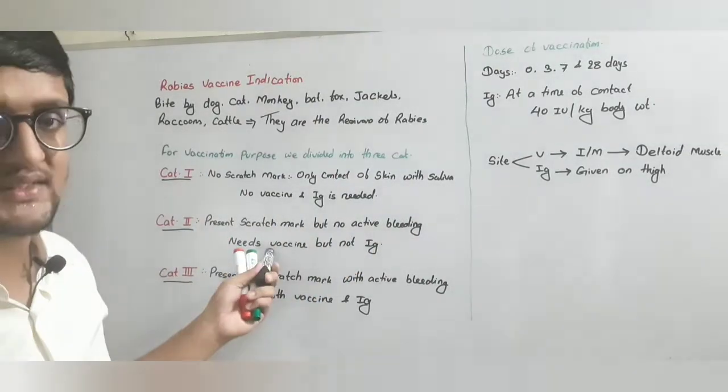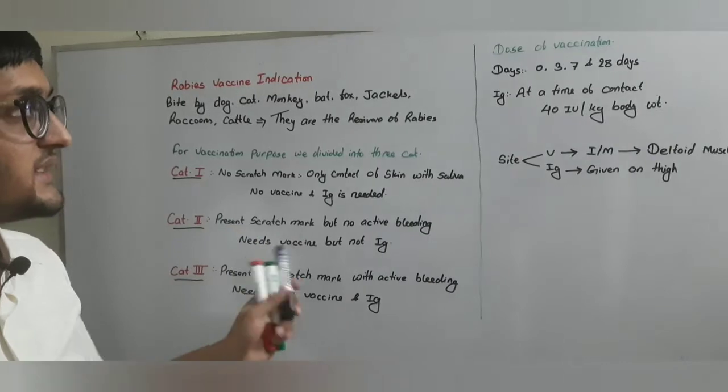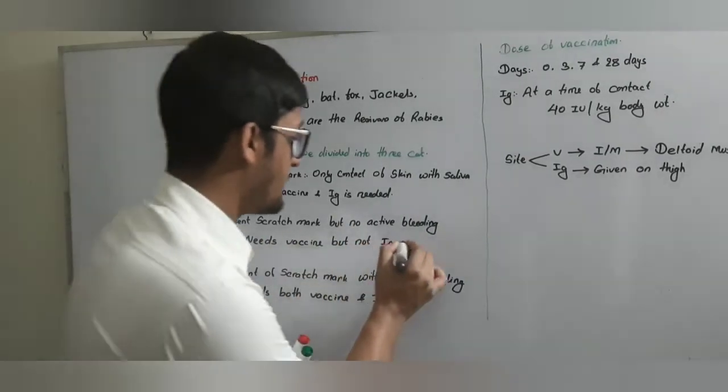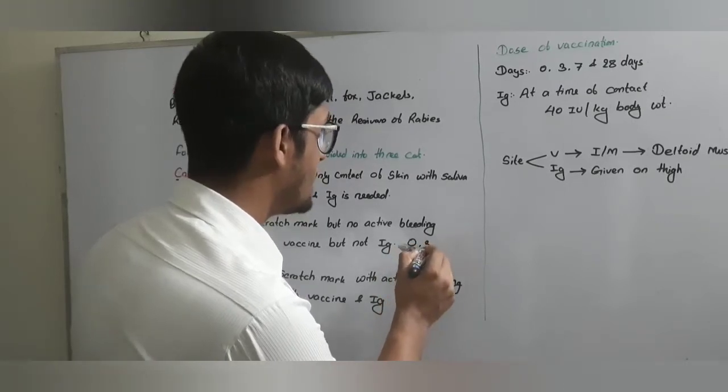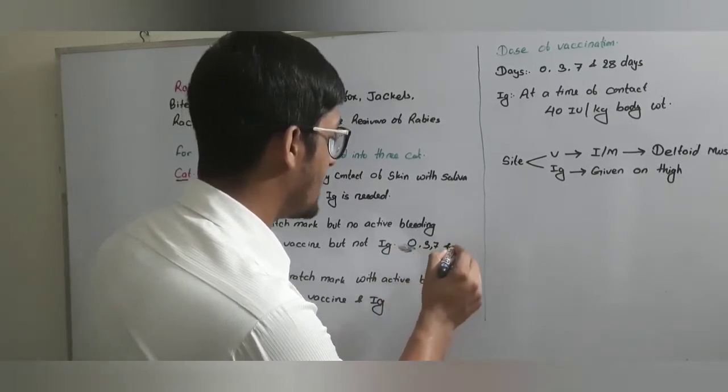In category two, only vaccine is needed, no need of immunoglobulin. So, vaccine is given at the day of contact that is at zero day, three day, seven day and 28 days.